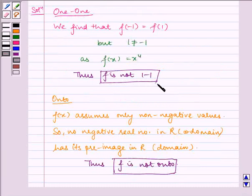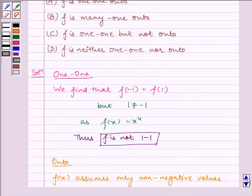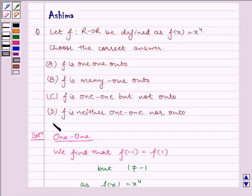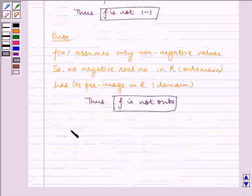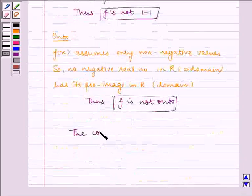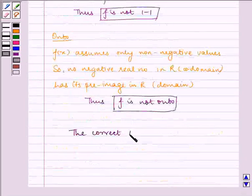Now, since f is not one-one and f is not onto, the only relevant option is D, that is f is neither one-one nor onto. Therefore, the correct answer is D.